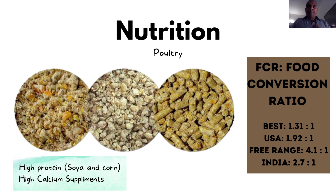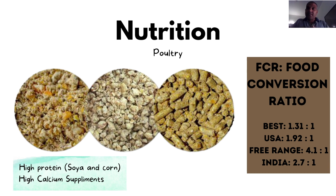Sometimes we use waste from fisheries in the feed to boost the protein content, but basically we use soybean and corn. The issue with using soybean and corn is that these are crops that could actually go to feed human beings. So the question is: in a world where there is still starvation and hunger, is it right to be doing this?